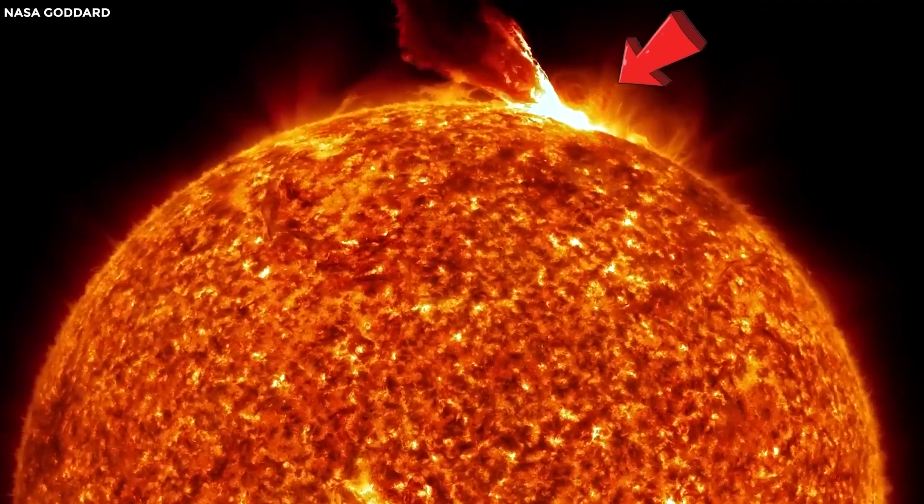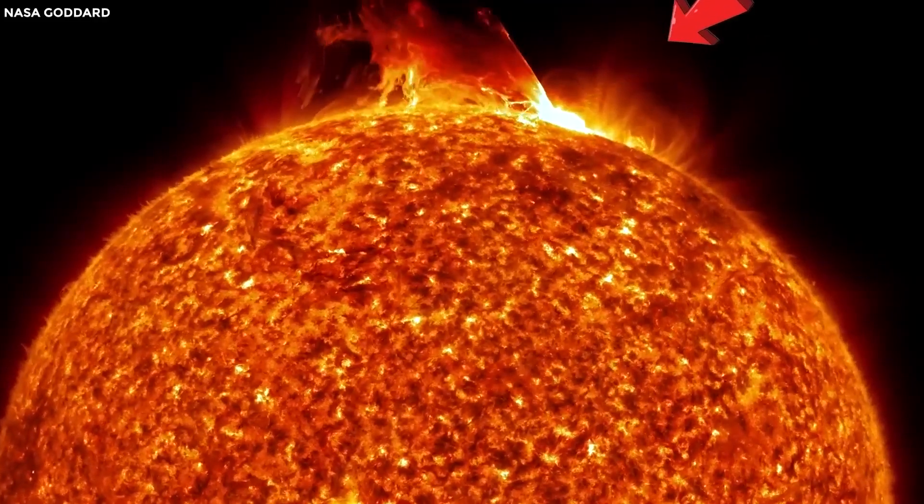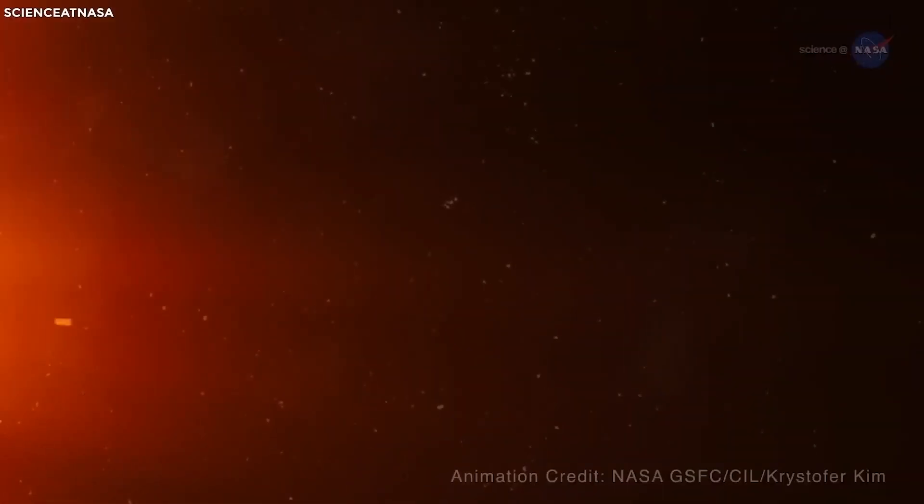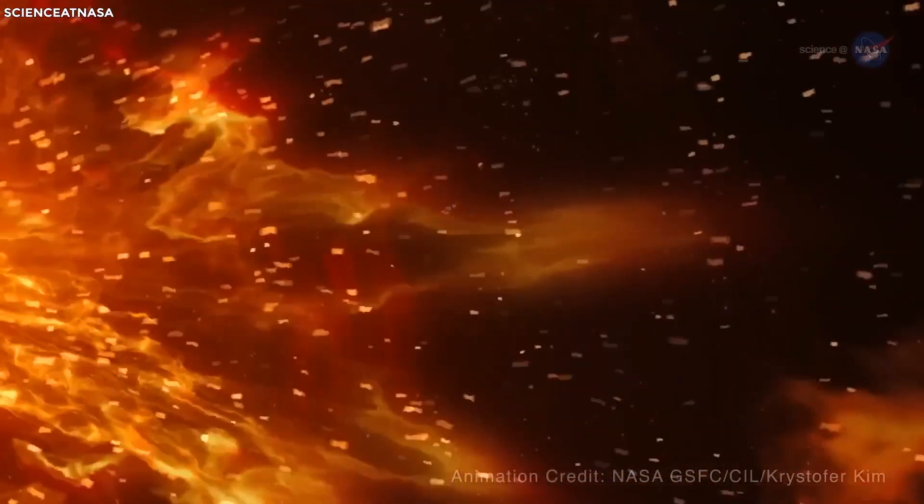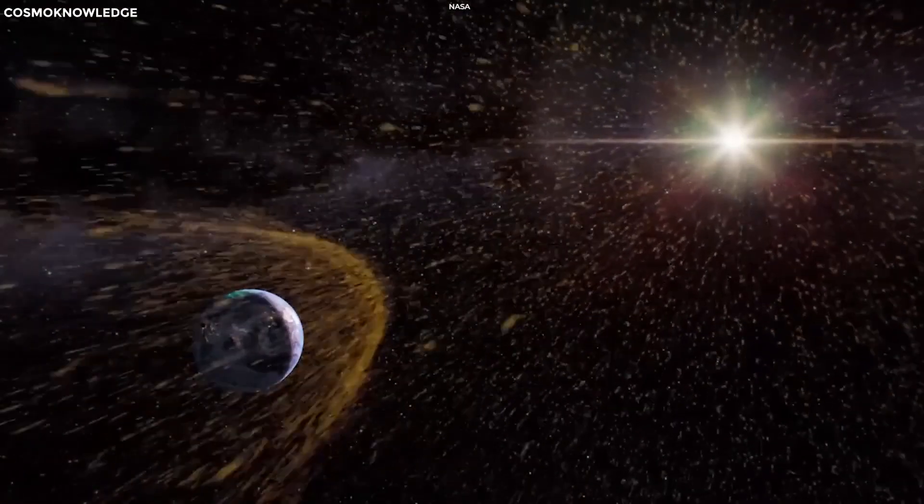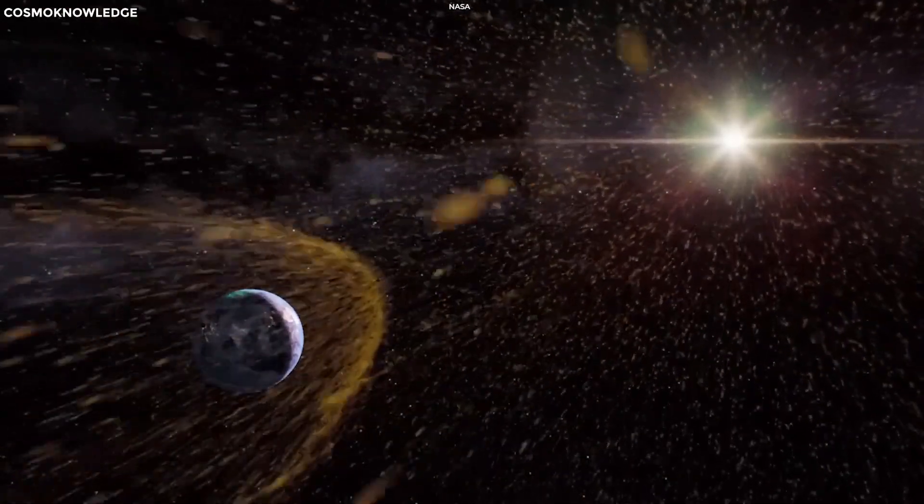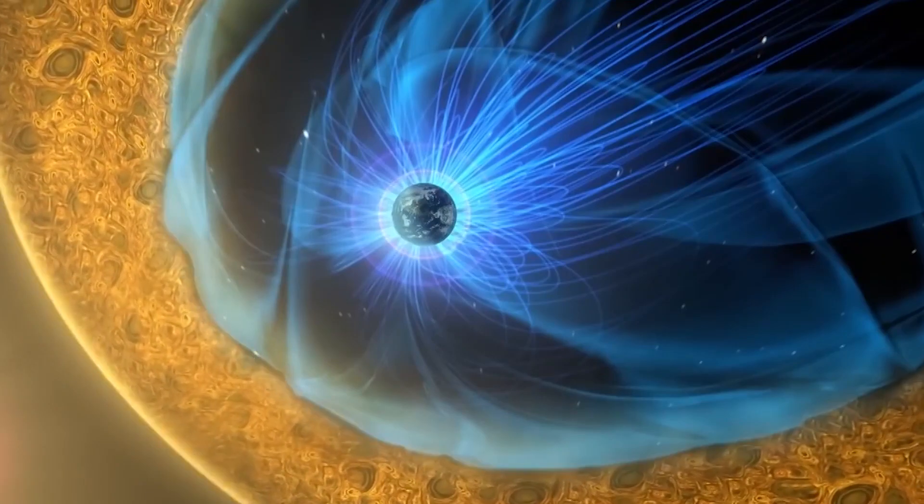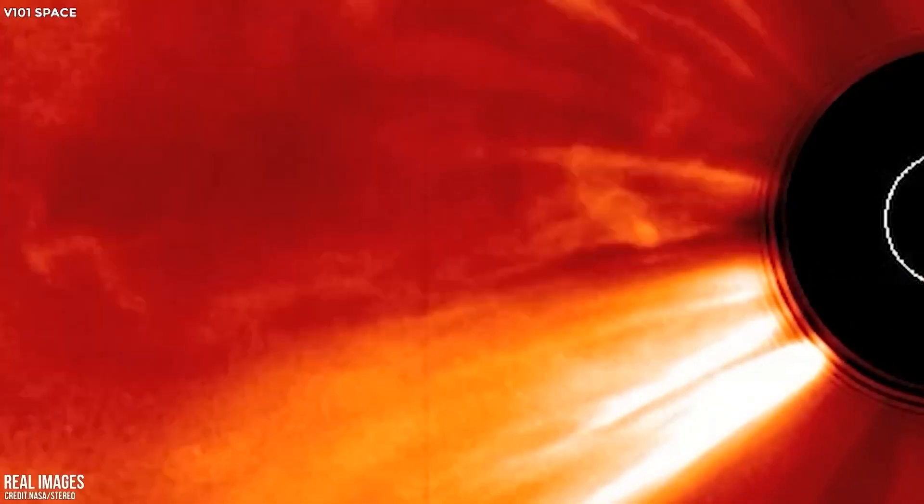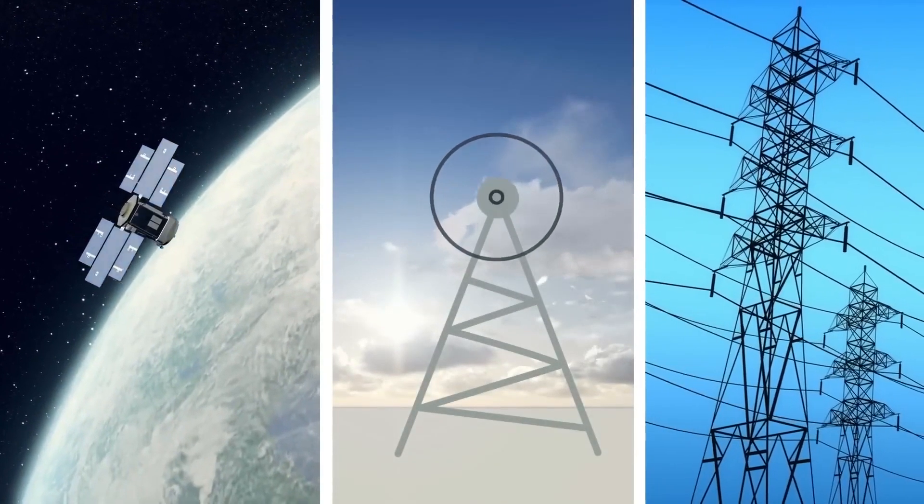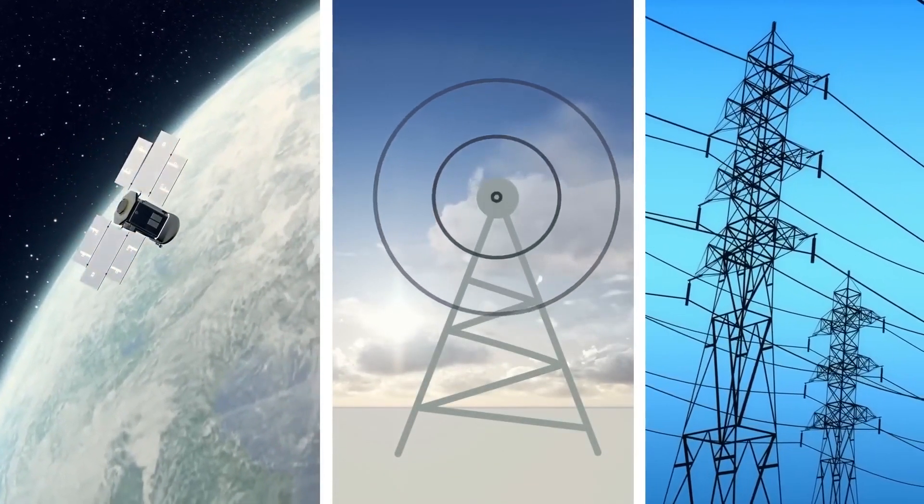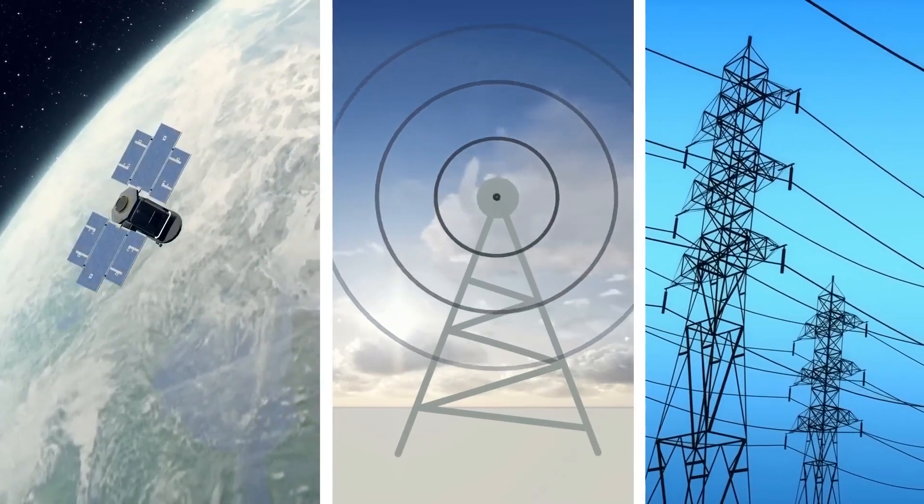X-class flares are the most powerful and capable of causing significant disruptions to our planet's magnetosphere. Associated with these flares are coronal mass ejections, or CMEs, huge bubbles of gas threaded with magnetic field lines that are ejected from the Sun over several hours. If Earth is in the path of a CME, these charged particles can interact with our planet's magnetic field, causing a geomagnetic storm. These storms can lead to beautiful displays of auroras, but they can also cause disruptions in satellite communications, power grids, and radio communications, as do solar winds.